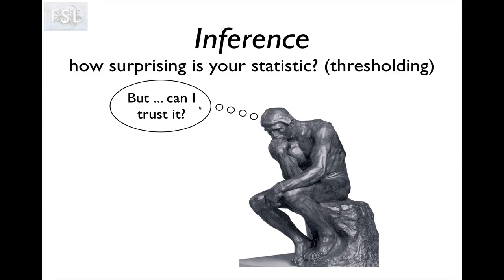Hello and welcome to this talk about inference in the FSL course. So first of all, what is inference? Well, it's what you do once you have done all the other things we talked about. You have now created a statistical map or an image where each pixel value represents a statistic of some sort, like a t-statistic or an f-statistic. And now from this map you want to infer where the activations are — i.e., which parts of this map can you trust the statistic such that you can say there has been an activation here.